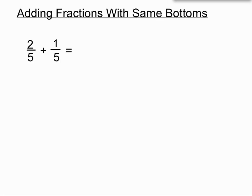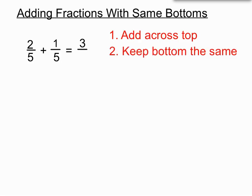So we have two fractions here, 2 fifths plus 1 fifth. Not a bad rule this one. If they've got the same bottoms it's pretty straightforward. Step 1 is to add across the top. So we add the 2 and the 1 and make 3 across the top. And we keep the bottoms the same. So the bottom of our answer there is 5.